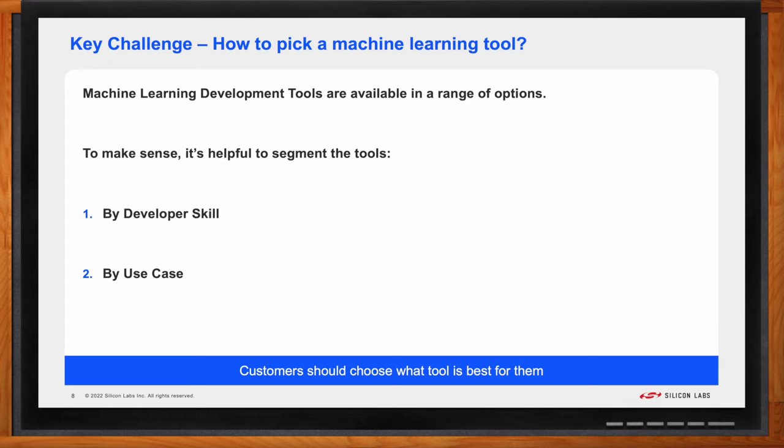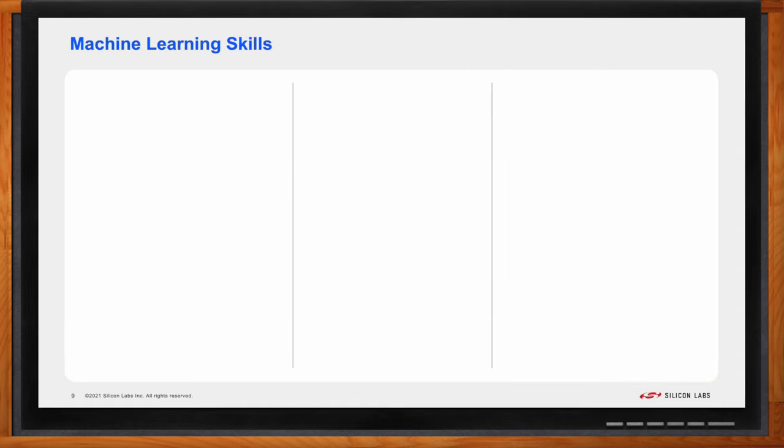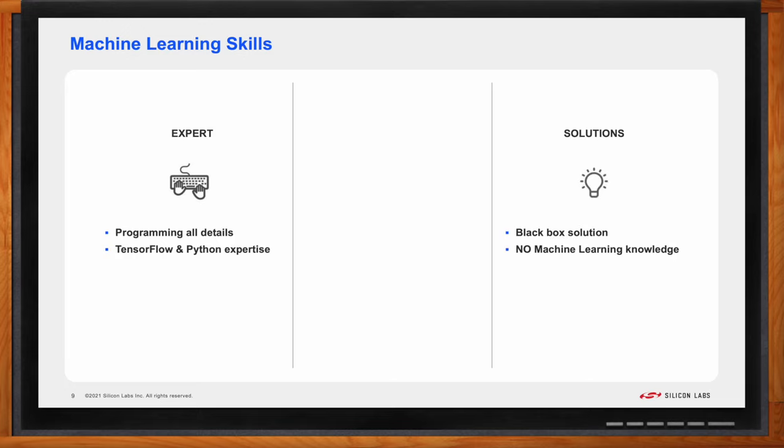Okay, Dan, tell me more. How do you define the machine learning skills required to use a tool? So we split the machine learning skills into three categories to make it a little easier to understand. Expert, explorer, and solutions. For Silicon Lab products, we define a machine learning expert as a developer that's experienced with TensorFlow and Python. The expert tools require that the developer have these skills or is willing to learn. On the other side of the spectrum, we call it the machine learning solutions developer. This developer wants to use machine learning technology to add value to their product, but does not have any knowledge about machine learning or is willing to learn. Instead, they want a black box solution they add as a value-added feature to their product.